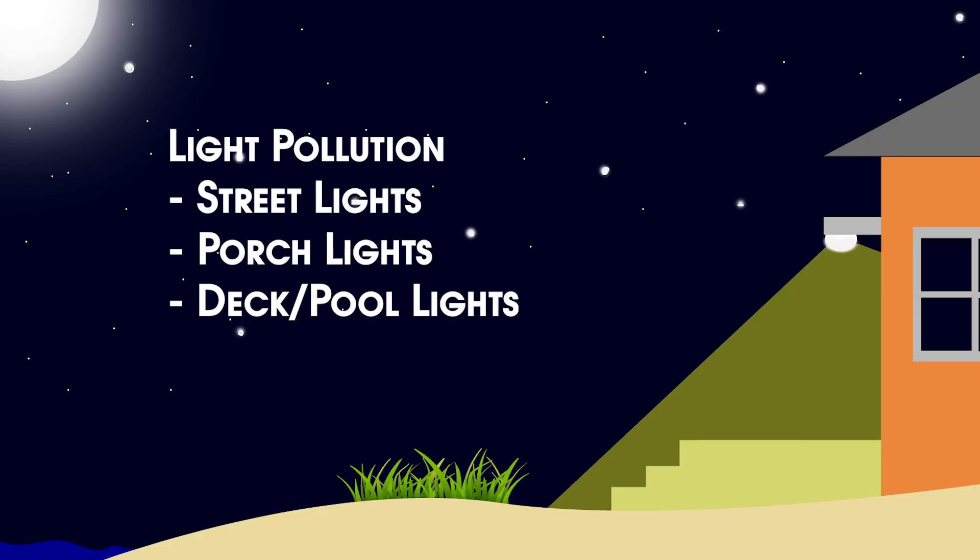Artificial lighting is called light pollution. This is when sea turtles are directed in the opposite way to where they need to go. Reports have shown that some sea turtles end up in backyards, pools, or different places because of light pollution.